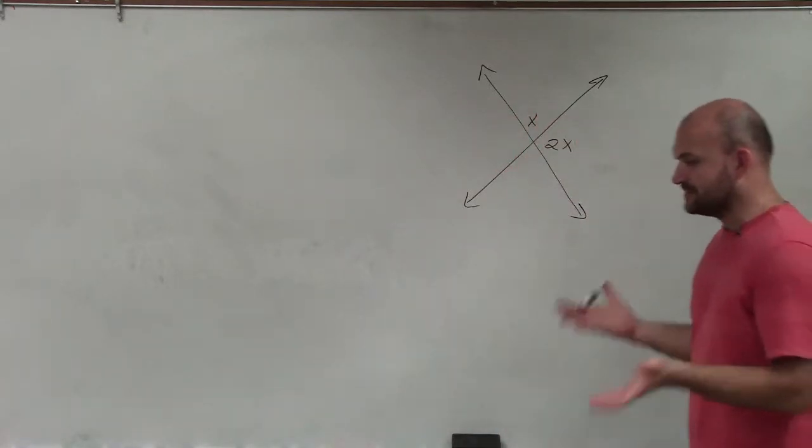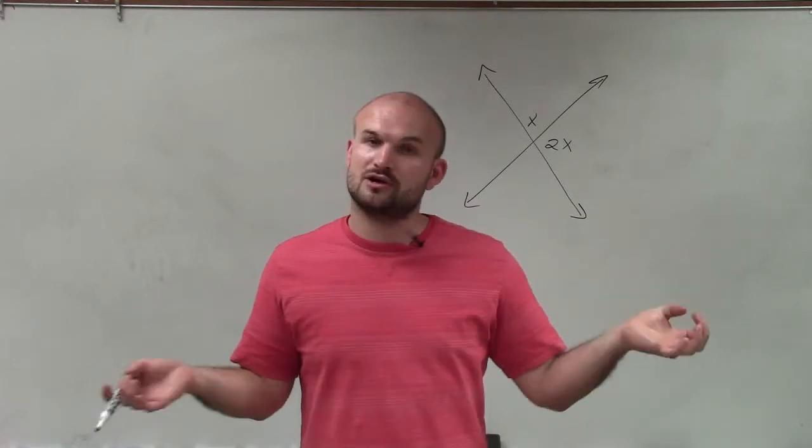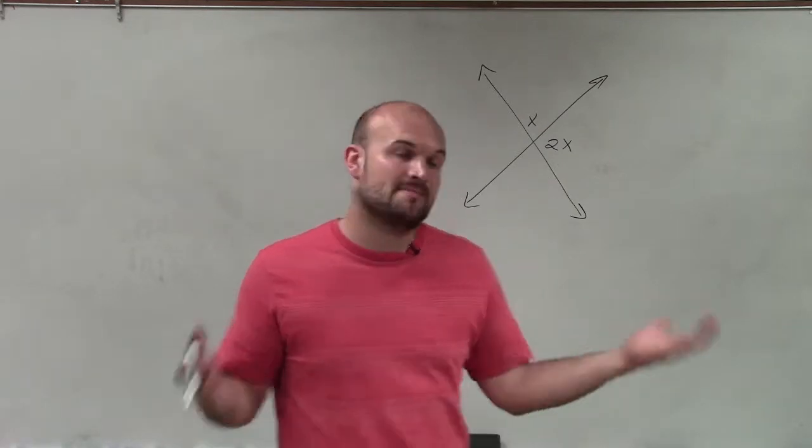So with two intersecting lines, the most common angle relationships that we're going to look for is vertical angles, angles that are directly across from each other, share the same vertex, but do not share any sides, or a linear pair, two angles that make up a line.